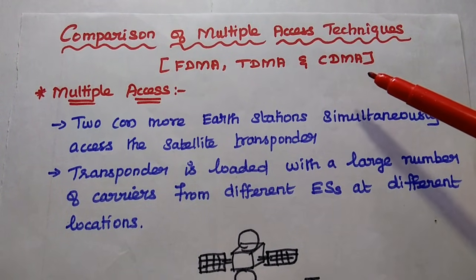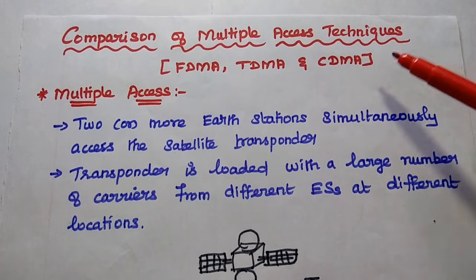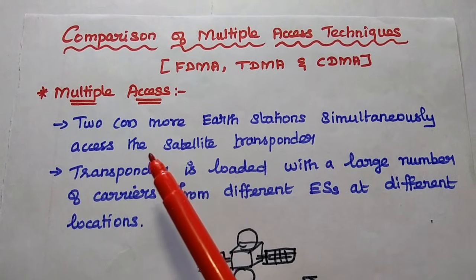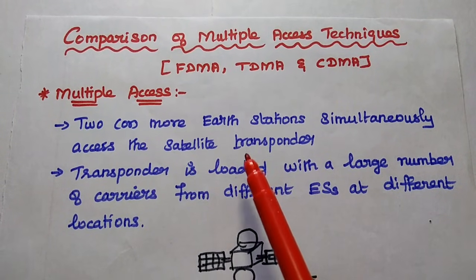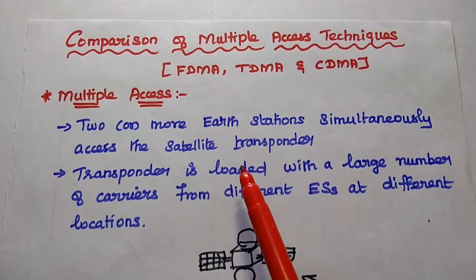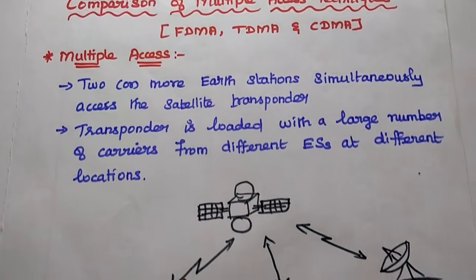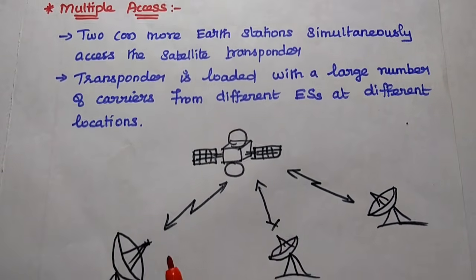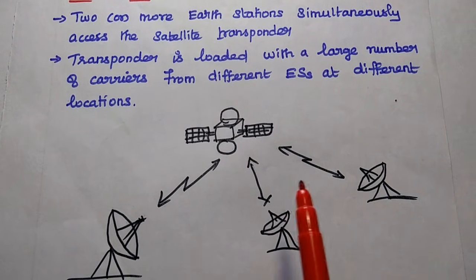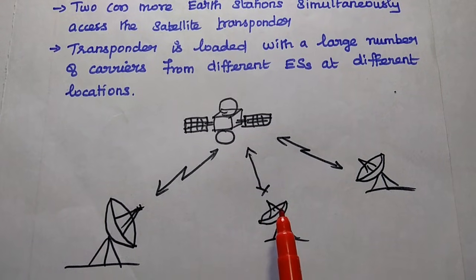Now we are going to discuss the comparison of multiple access techniques in satellite communication. In satellite communication, when two or more earth stations simultaneously access the satellite transponder, that is called a multiple access technique. In this method, the transponder is loaded with a large number of carriers from different earth stations at different locations.